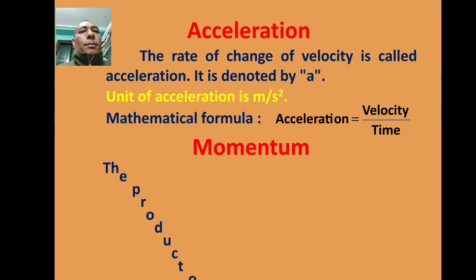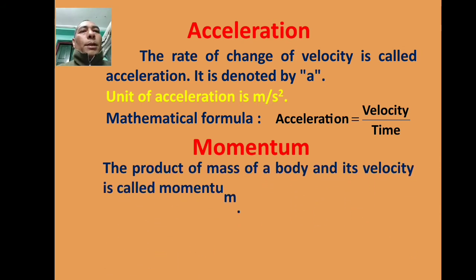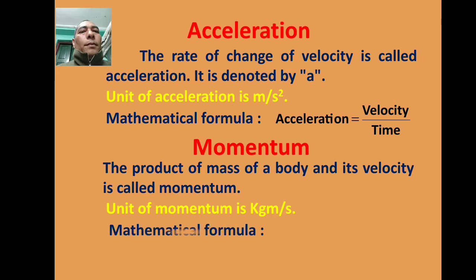Momentum: The product of mass of a body and its velocity is called momentum. Unit of momentum is kilogram meter per second. Mathematical formula: Momentum equals mass multiplied by velocity.